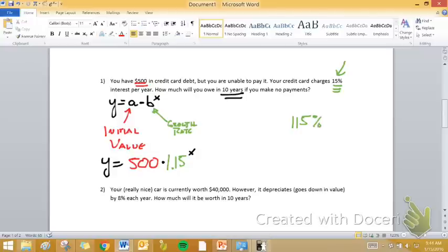you would take 115% and move the decimal two places to the left to get 1.15. That's how I'm getting this growth rate. I added 15% to 1 because the amount we owe is increasing.